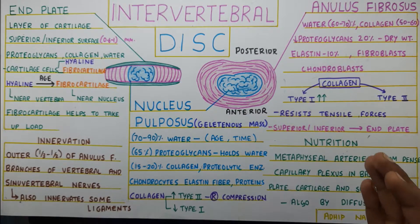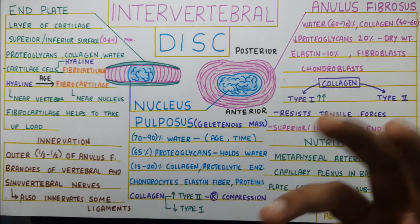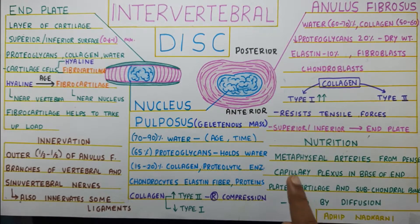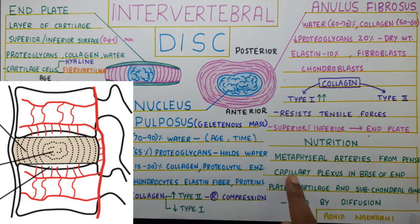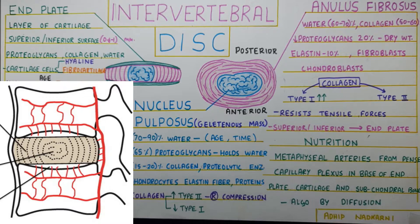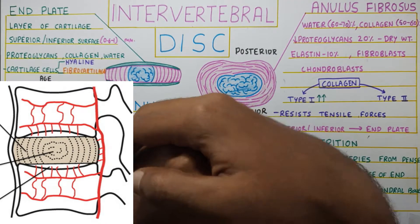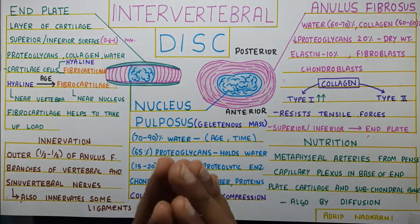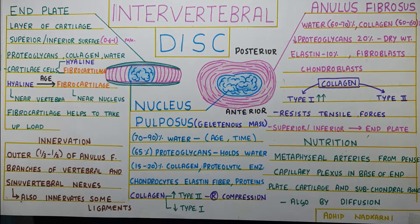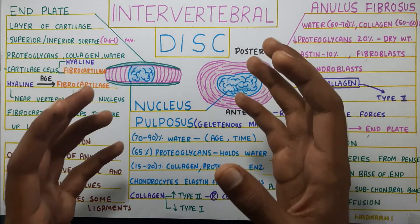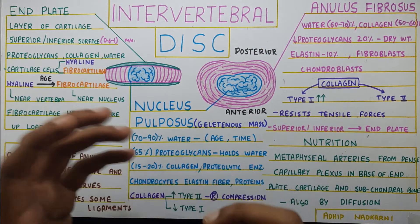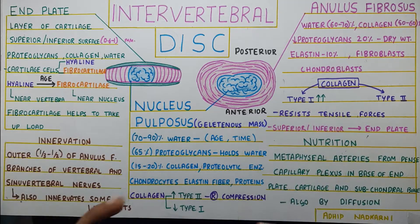For nutrition, the disc receives its supply through diffusion, but also through metaphysial arteries from the dense capillary plexus at the base of the end plate cartilage and subchondral bone — just below the cartilage, where there is a very rich blood supply. Once the disc gets blood supply through these metaphysial arteries, nutrients are spread throughout the disc via compression and diffusion.